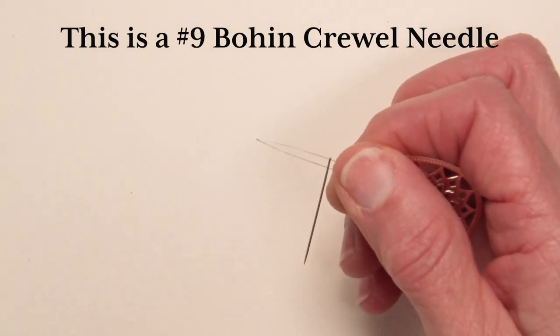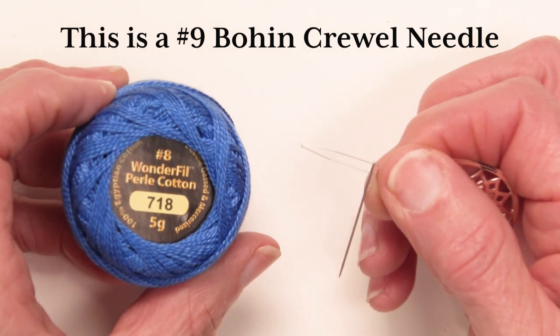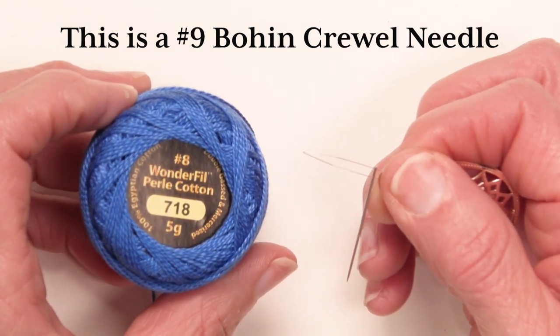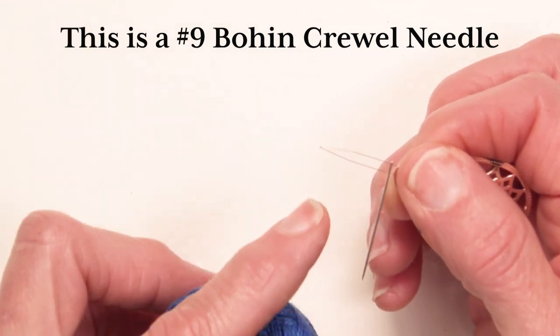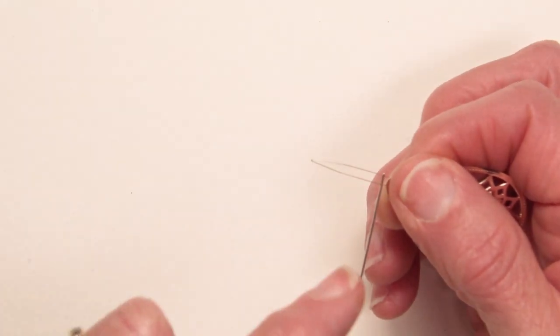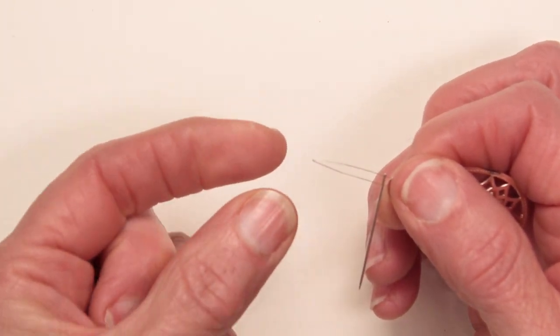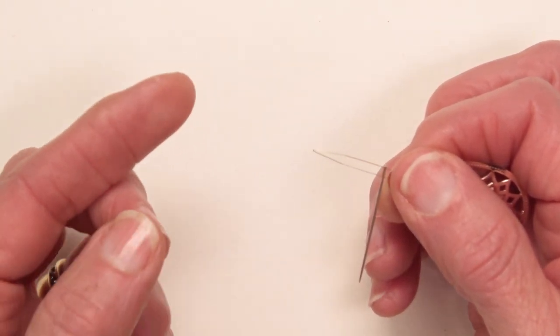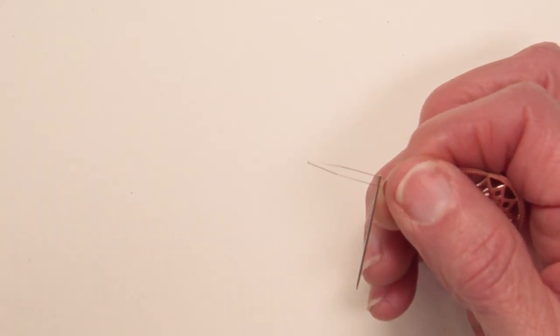I tried the wire with the number 8 pearl cotton. It did not want to go through because even though the wire fits easily, when you put thread through the wire and pull it through, you're trying to pull through two strands of the thread at once. That was a no-go.